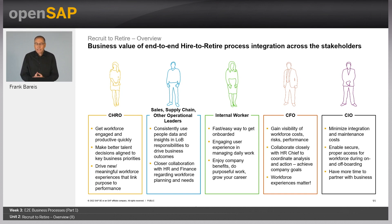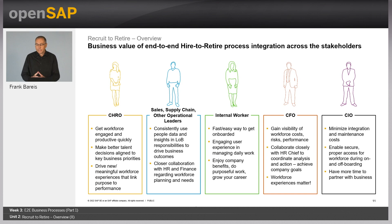Coming to the right side: finance — the chief finance officer is interested in workforce costs, risks, and performance, gaining visibility into that, while also collaborating closely with the head of HR to achieve company goals. And we have the CIO, who is very interested in minimizing integration costs, which can be very costly if not well integrated. Security and access to the systems is also of crucial interest to the CIO.